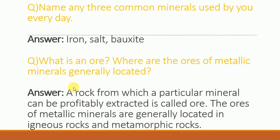Now, what is an ore? Where are the ores of metallic minerals generally located? A rock from which a particular mineral can be profitably extracted is called ore. The ores of metallic minerals are generally located in igneous rocks and metamorphic rocks.